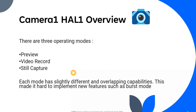With camera one, you can just capture an image or record a video, but you cannot get more information about the picture or video. If you want to enhance anything or modify camera sensor characteristics, you cannot do so — you just capture and leave it. There were only three operating modes: preview, still capture, and video recording. Each mode had slightly different and overlapping capabilities, which made it hard to implement new features such as burst mode.